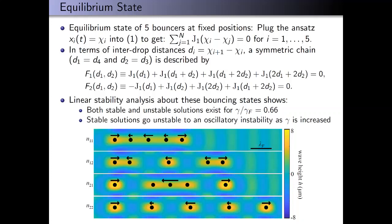We'll introduce this convention d_i: d1 is the distance between drops one and two, d2 is the distance between drops two and three, etc. We're going to consider the case of symmetric chains, so d1 equals d4 and d2 equals d3. When we plug that in, we end up with just a system of two equations in two unknowns.